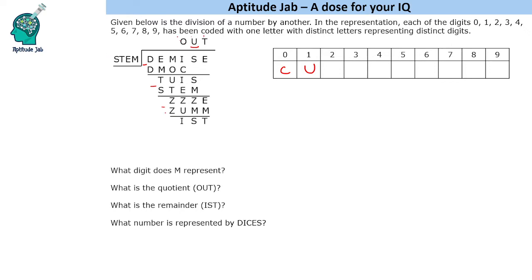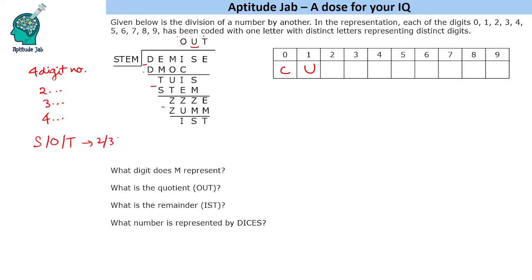STEM is multiplied by O and also by T, and we are getting four-digit numbers. If we multiply a four-digit number not starting with 1 — since U is already 1 — it can start with 2, 3, or 4. So S, O, and T must be among 2, 3, and 4, because multiplying with O or T must still give a four-digit result.